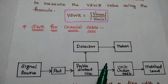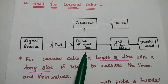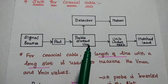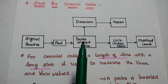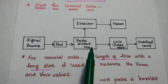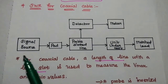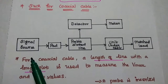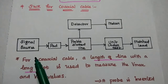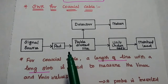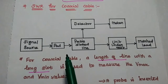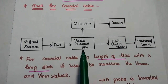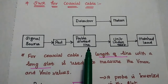The next method is SWR measurement for coaxial cable. This is the block diagram for the coaxial cable method. A length of line with a long slot is used to measure the maximum and minimum values. The signal source produces a signal to the coaxial probe and is perfectly matched with the impedance to avoid any reflection. The pad is a resistive element which can absorb any reflected waves from the receiving end.